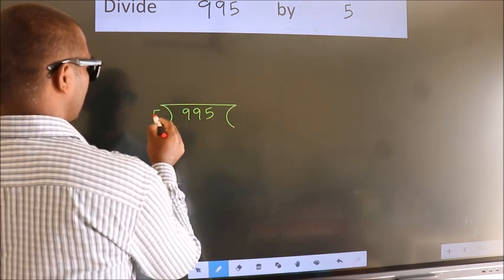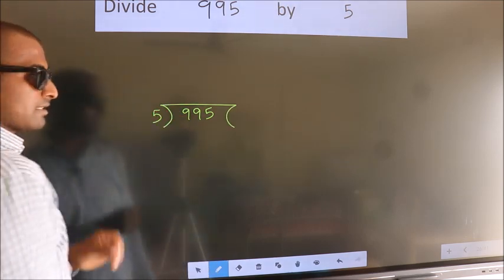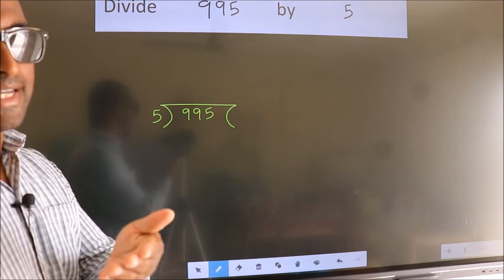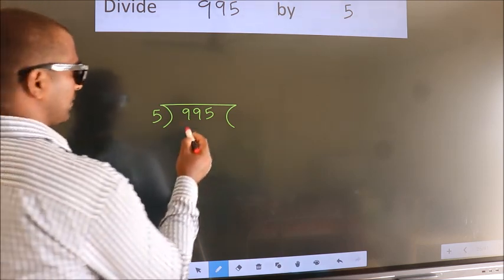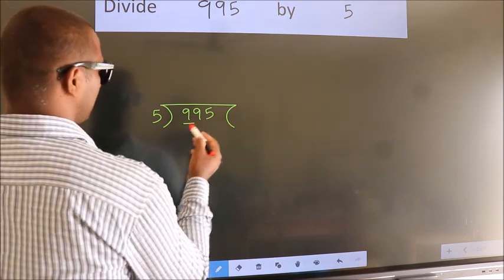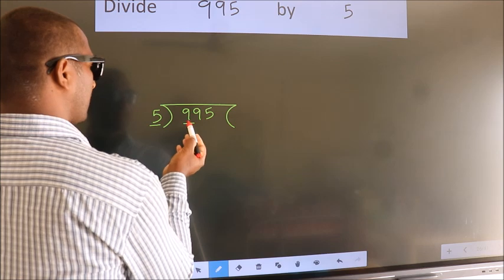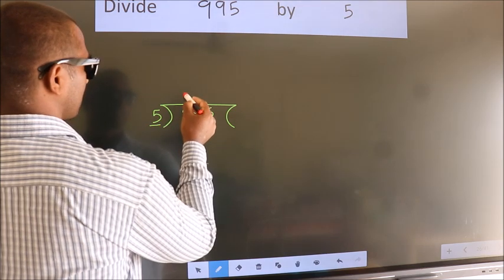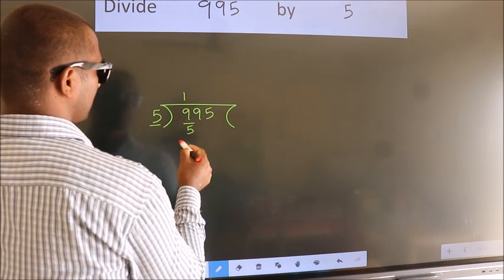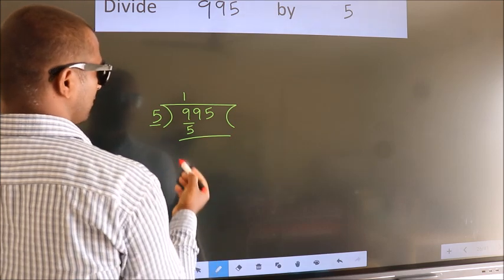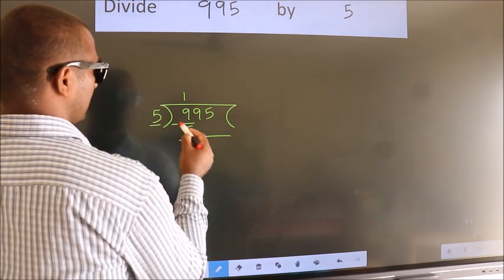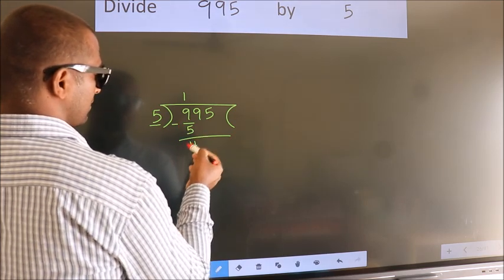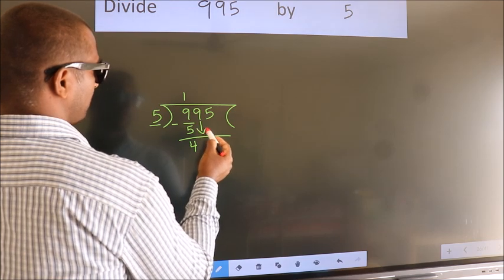5 here. This is your Step 1. Next, we have 9 here. A number close to 9 in the 5-times table is 5 once, which is 5. Now we subtract — we get 4. After this, bring down the beside number.